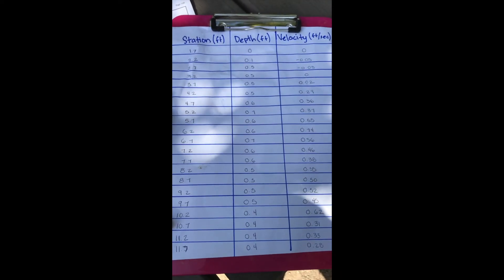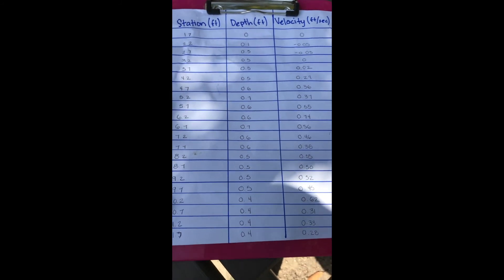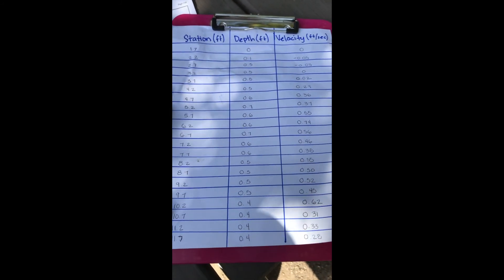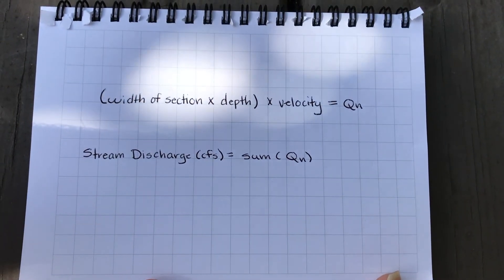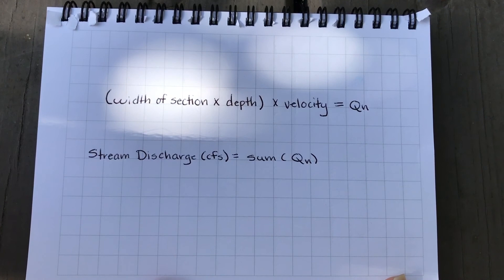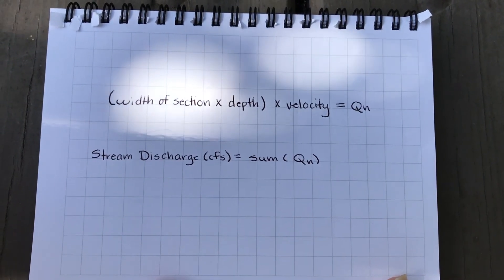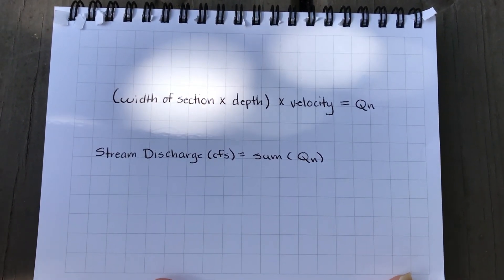This is our station depth and velocity data that we collected into a chart. The discharge at each section was determined by multiplying the section width of 0.5 feet by its depth and velocity. The total stream discharge was determined as the sum of each of these calculations. For convenience, we used Excel for our calculations. After entering our data and applying the previous formula, our calculated stream discharge came out to be 2.0255 cubic feet per second.